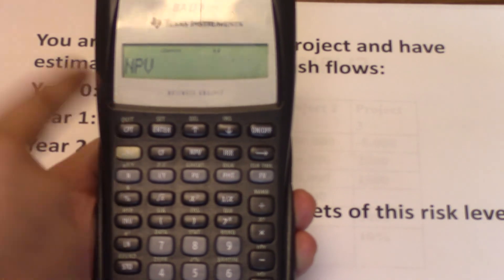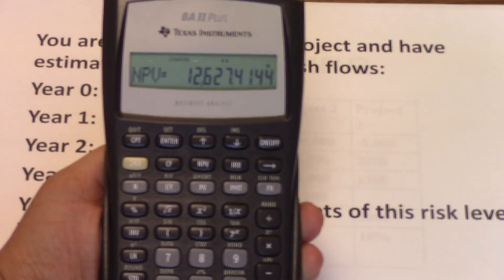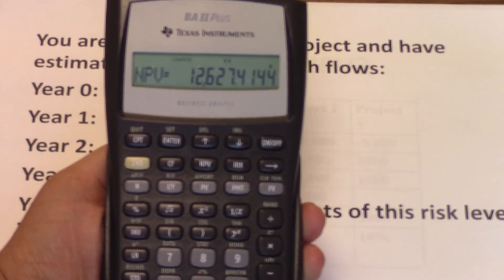So you hit CPT. This gives us an NPV of $12,627.41.